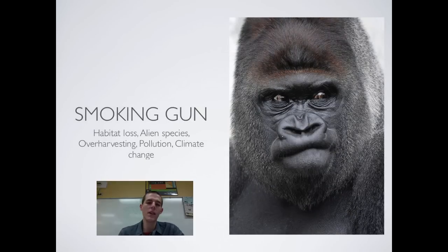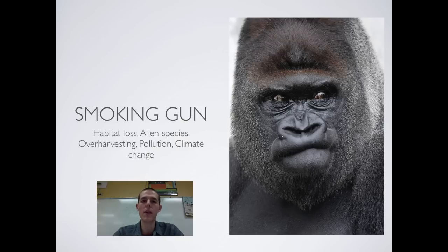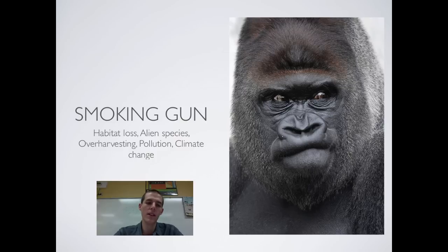The best way to begin is to talk about those things so you can get them into your brain. Throughout this unit, we're going to be talking about declines in biodiversity. There are five major things that have been shown to be the driving forces behind losses in biodiversity: habitat loss, alien species, over-harvesting, pollution, and climate change.